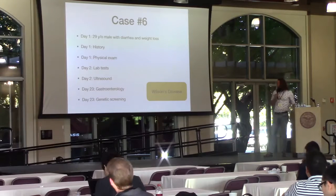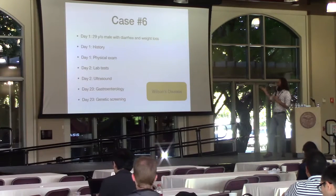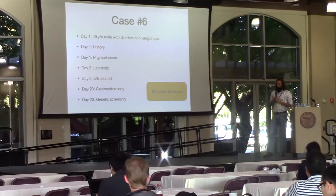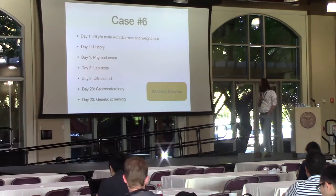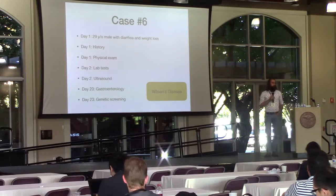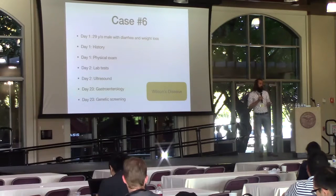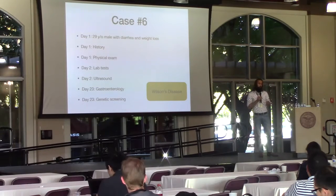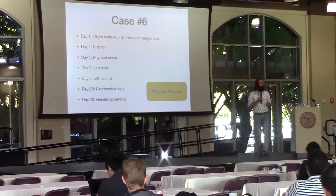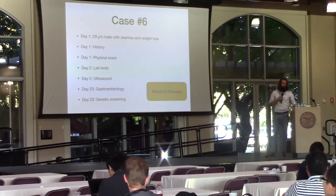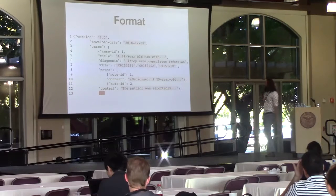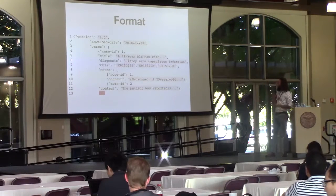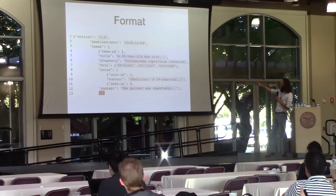This case led to a diagnosis of Wilson's disease, which, as my clinically informed collaborators tell me, means you are building up copper in your body — which makes not just all your organs fail, but also makes you hallucinate and go insane. We are sharing the dataset in XML format, where you'll see all the different nodes and the CUIs that each case leads to.